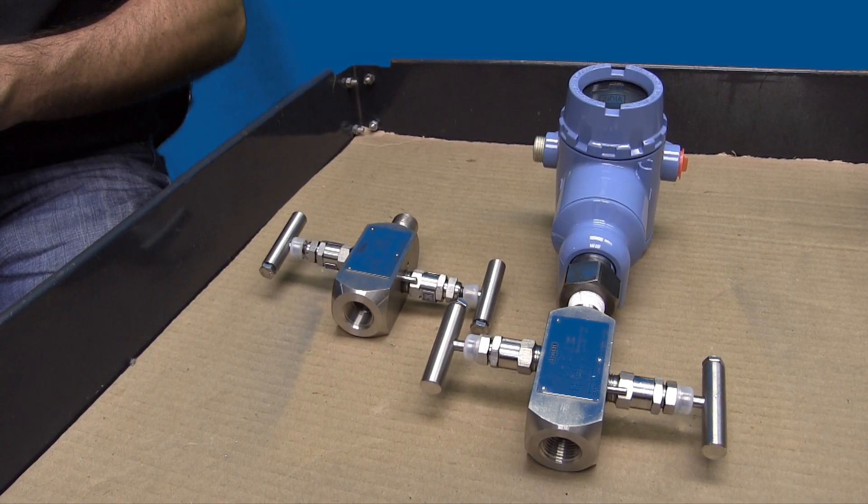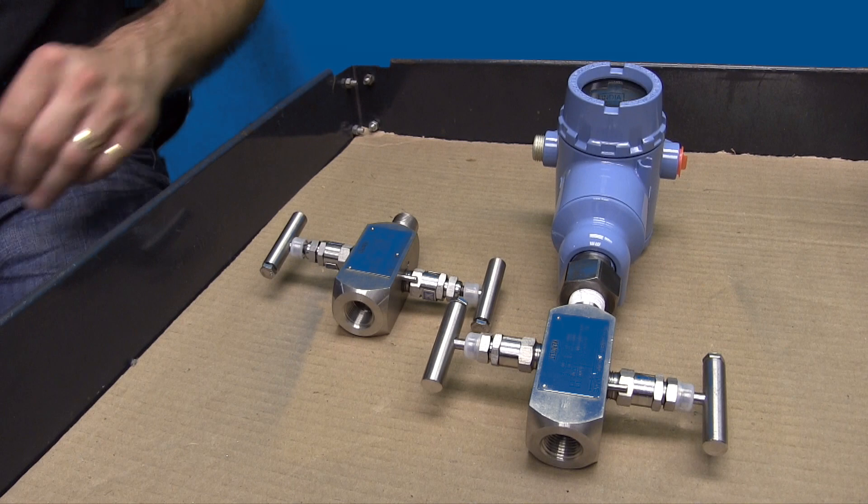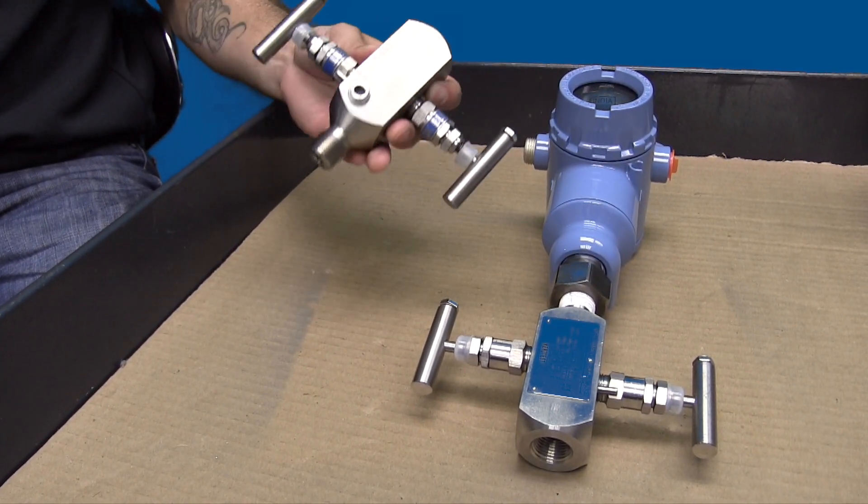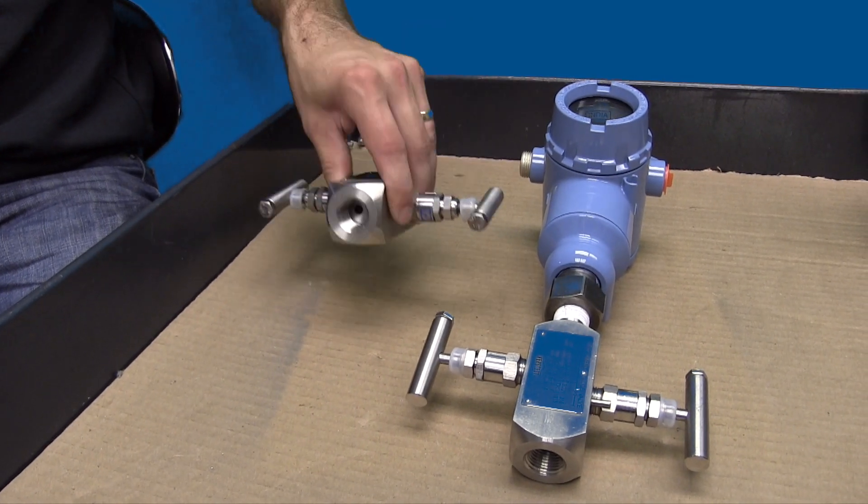In-line manifolds are used on direct connect style sensors. These are usually two-valve, half-inch NPT combinations involving female and male connections. They are also called block and bleed manifolds.